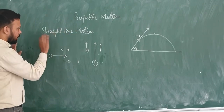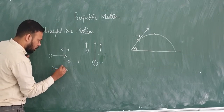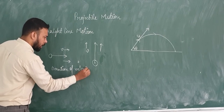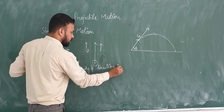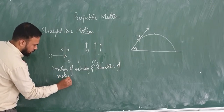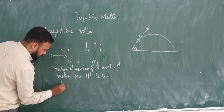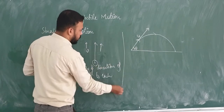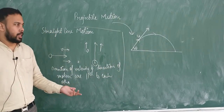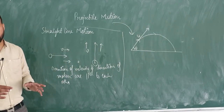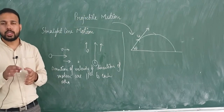So if I write the definition: in straight line motion, the direction of velocity and direction of motion are parallel to each other. In projectile motion, the direction of velocity and direction of motion are different. Now I am going to evaluate the equation of projectile motion and I will show that the motion is parabolic.